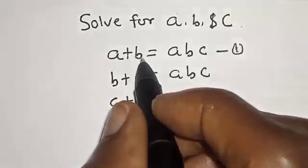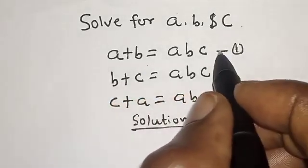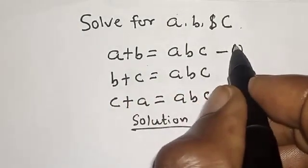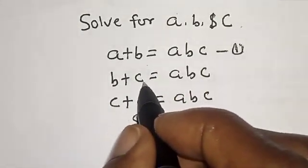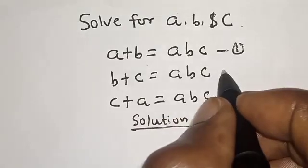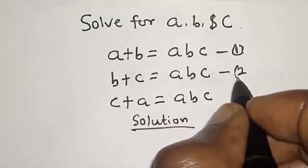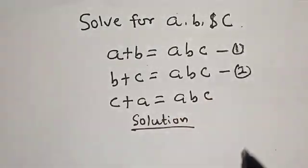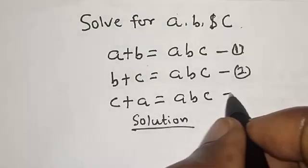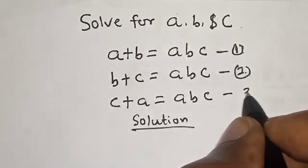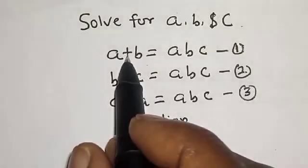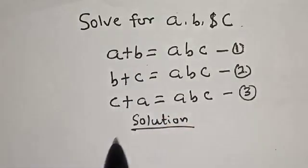Let's label the equations. a plus b equals abc — call this equation one. b plus c equals abc — call this equation two. And c plus a equals abc — call this equation three. Now let's subtract equation one from equation two.